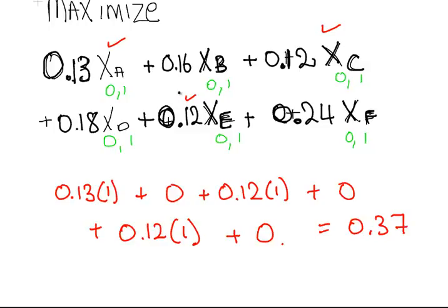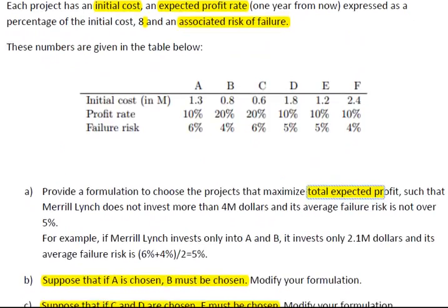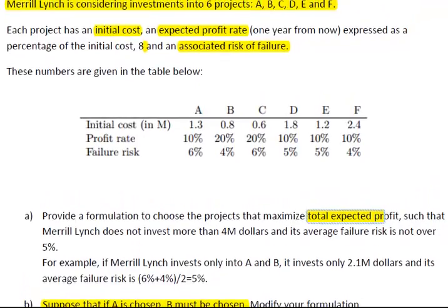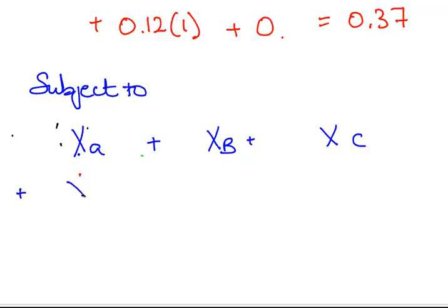That's what we got to maximize. Now we have to consider the constraints. I cannot invest more than $4 million, so the sum we spend here cannot exceed 4 million. Subject to 1.3xa plus 0.8xb plus 0.6xc plus 1.8xd plus 1.2xe plus 2.4xf, those are the binaries.